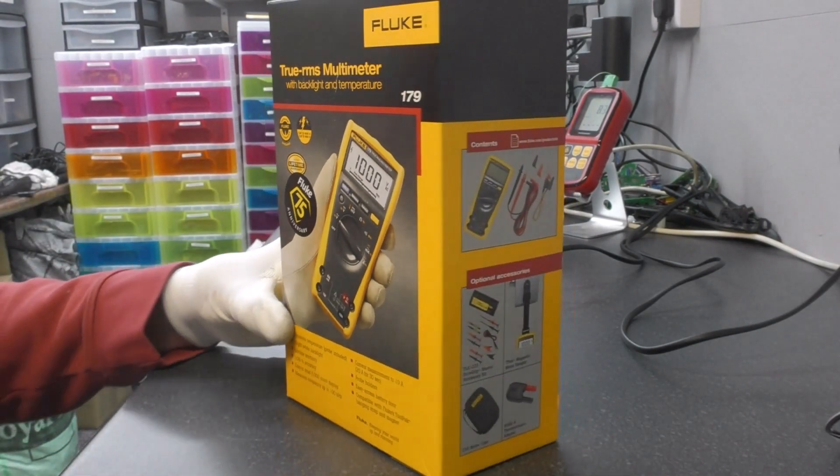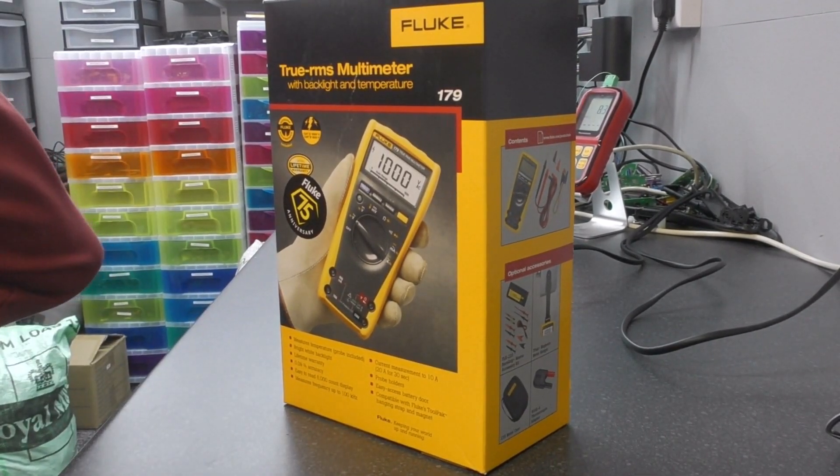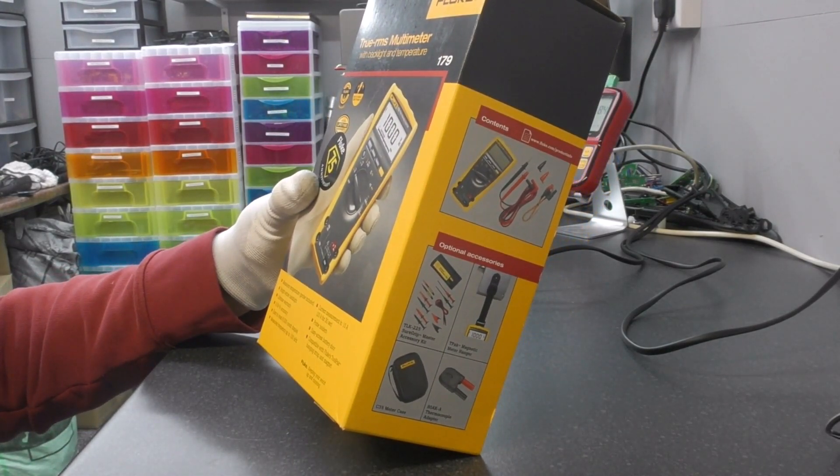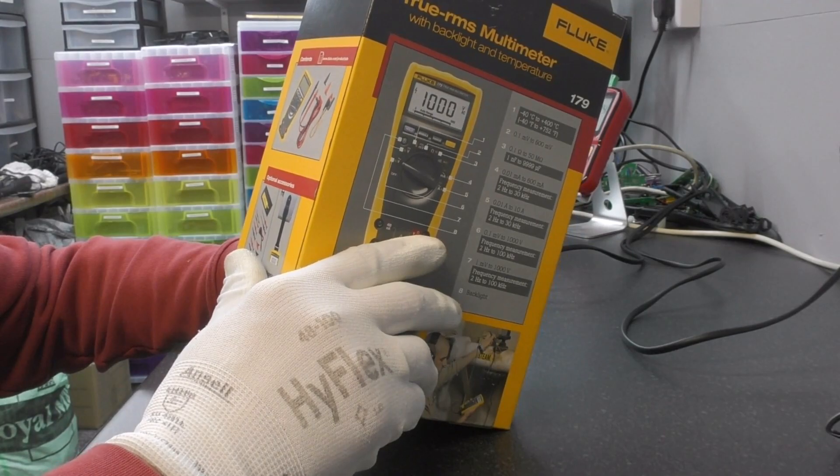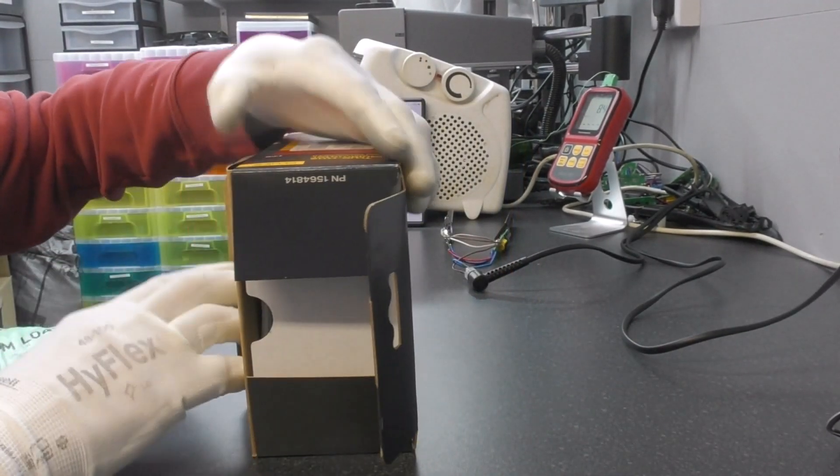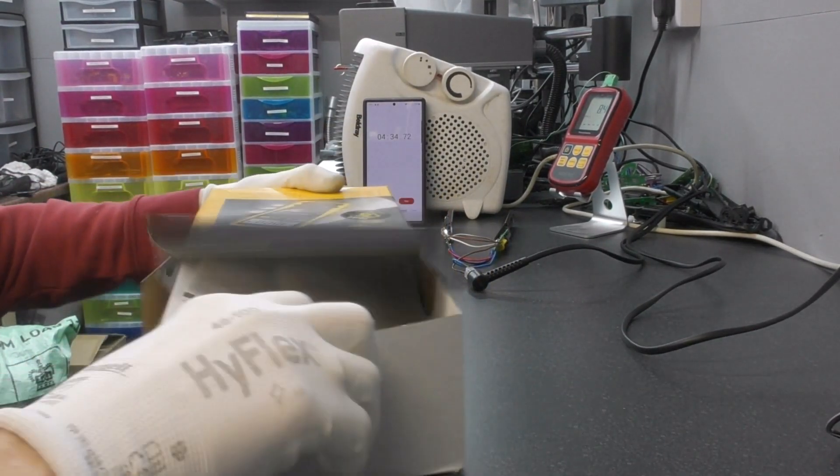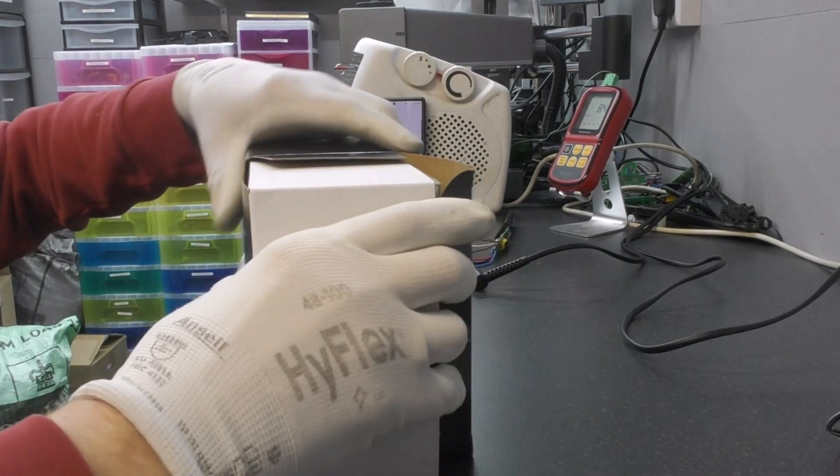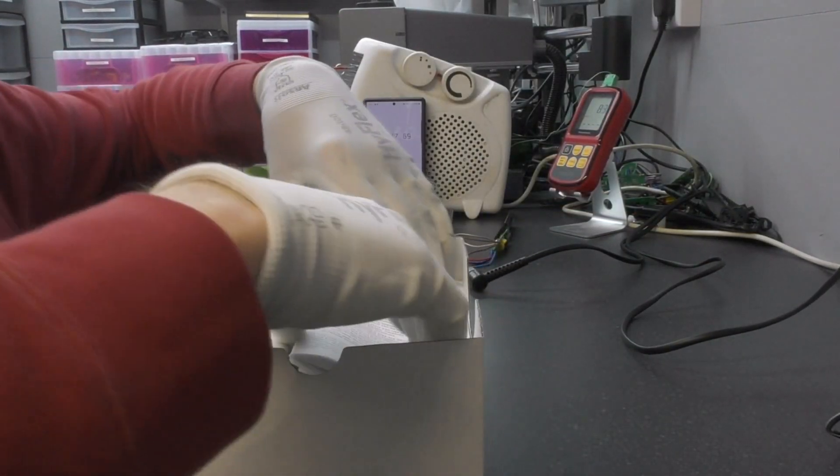This is around the 500 quid mark. It's a true RMS with backlight and temperature, category 3 and 4, genuine Fluke accessories. I just couldn't carry on any longer with that meter. All these cheap meters seem to have some issue, going off every 10 minutes or whatever. It was a real pain.